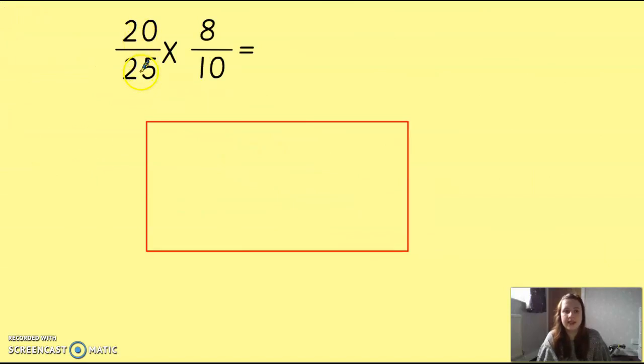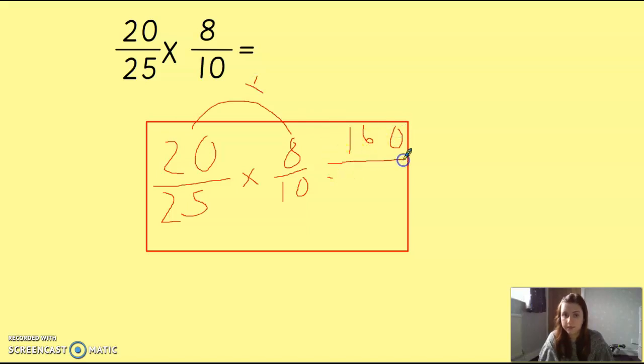And then a final one for you to have a go at. So 20 twenty-fifths times 8 tenths. So have a go at that one using the same method. Okay. So we should have 20 twenty-fifths times 8 tenths. So we know we times the top by the top. So 20 times 8, which gives us 160. And then we times 25 by 10, which would give us 250.